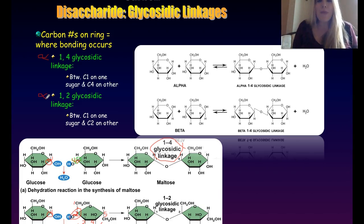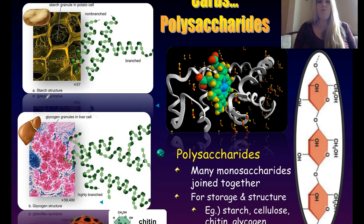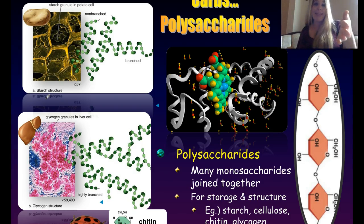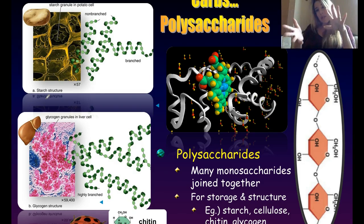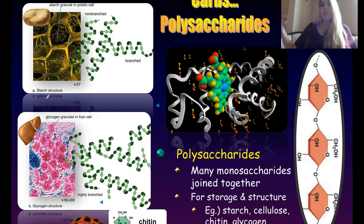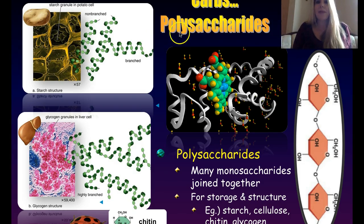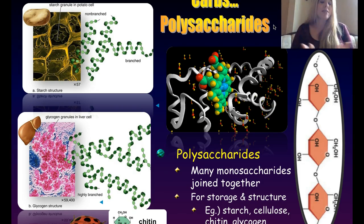Let's move on to polysaccharides. A monosaccharide is one sugar, a disaccharide is two, an oligosaccharide is a few, but once you get a whole bunch of monosaccharides joined together you call it a polysaccharide — because 'poly' means many.